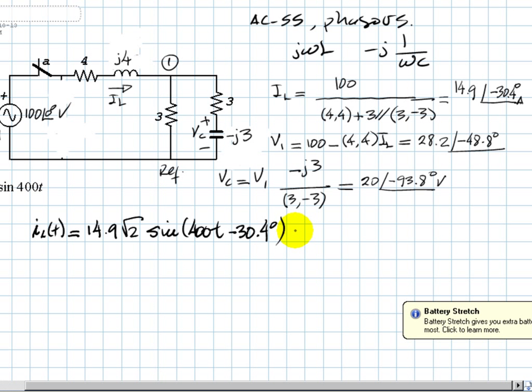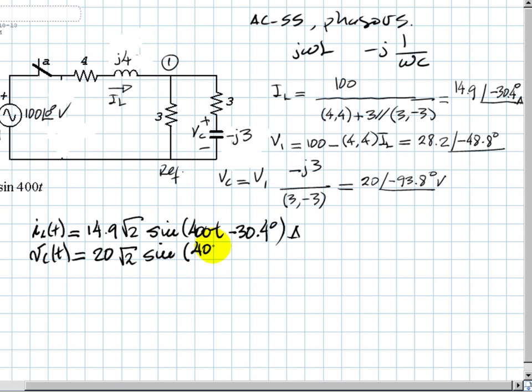That is the current in the inductor. And the voltage in the capacitor, as a function of time in steady state, is 20 times root 2 to get the peak value of that wave, sine, because the source is a sine, 400T minus 93.8 degrees. These are volts.